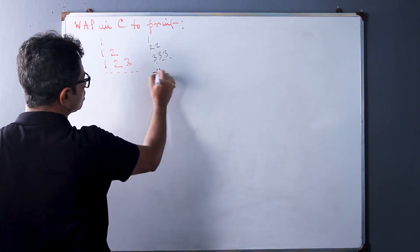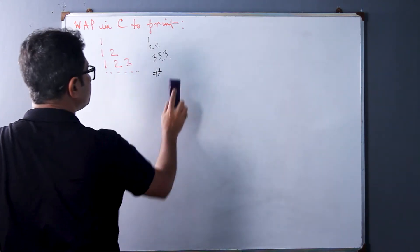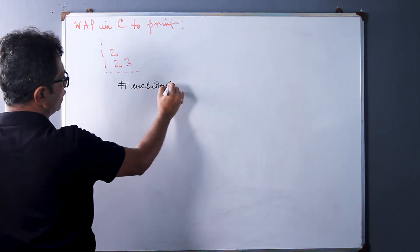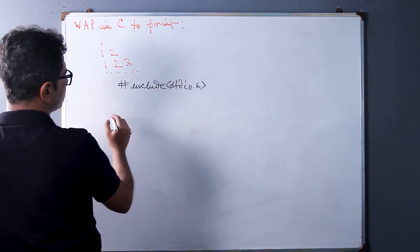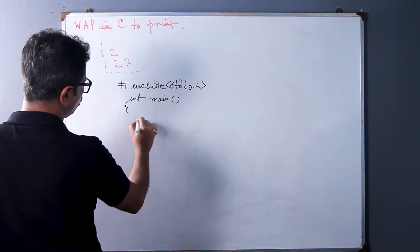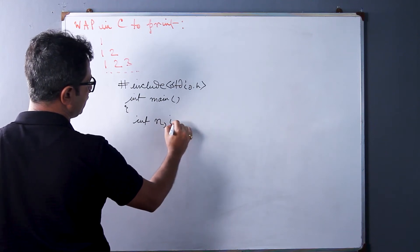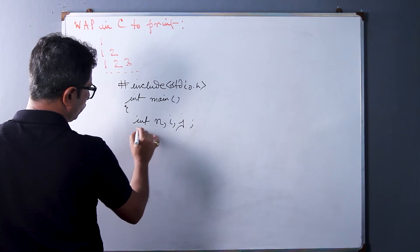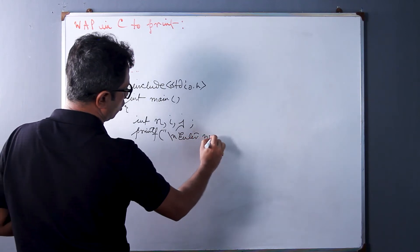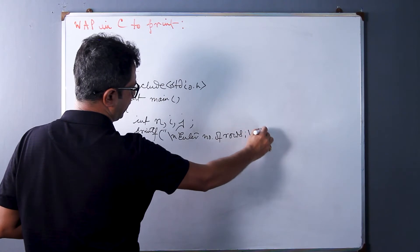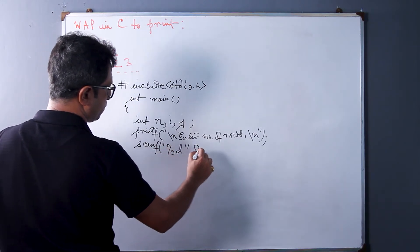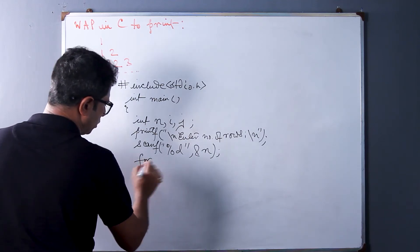We start with #include stdio.h — that needs no explanation. In int main, we declare the variables: int n for the number of rows, i as a loop variable, and j as another loop variable. Then we give the prompt to the user with printf, and take input using scanf with %d and &n.